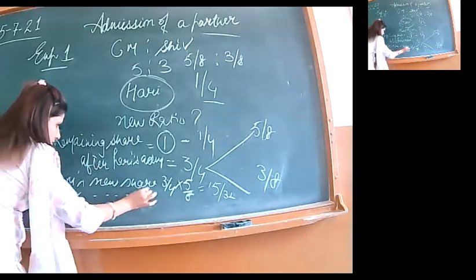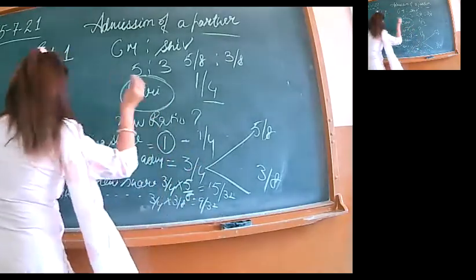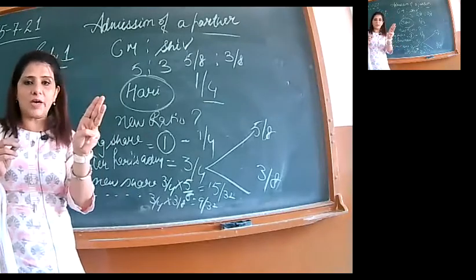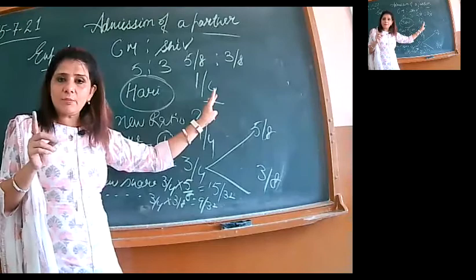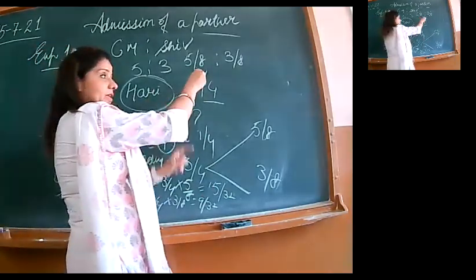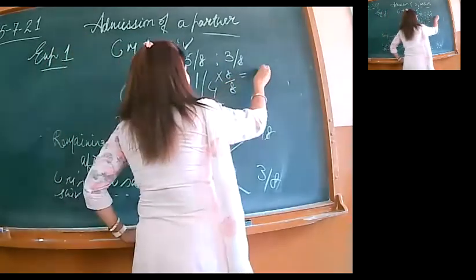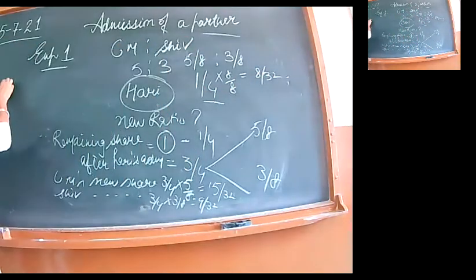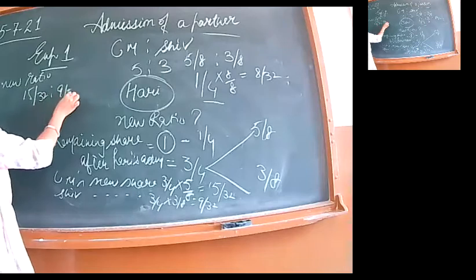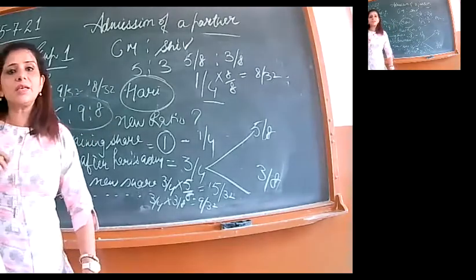Now look carefully. Fifteen by thirty-two, nine by thirty-two. New ratio has to be among three partners: Om is to Shiv is to Hari. Hari's new share everyone knows is one by four. Again math rule: when making ratio, we need like fractions. To make like fractions, I'll multiply by eight above, eight below to make denominator thirty-two. So Hari's new share becomes eight by thirty-two. Now answer for examiner: new ratio equals fifteen by thirty-two is to nine by thirty-two is to eight by thirty-two. Remove denominator: fifteen is to nine is to eight.